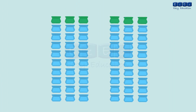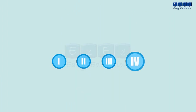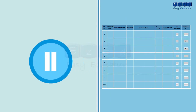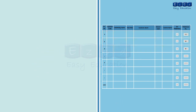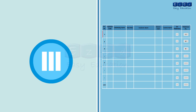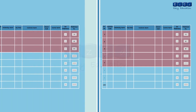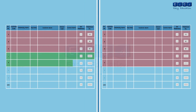Remember that all seats confirmed at the end of the first round will not be available for the next CAP rounds. All eligible candidates who did not secure admission in the first CAP round will have to fill up the option form again. In the second CAP round, if the candidate secures an allotment in any one of the first three options, they will not be eligible for subsequent CAP rounds irrespective of whether they confirm the admission or not. If the candidate secures an allotment in any of the remaining options, they can either confirm the seat or go for the next round.